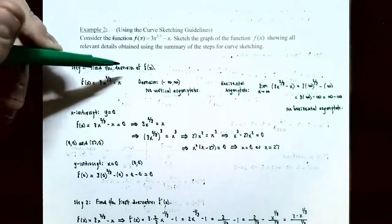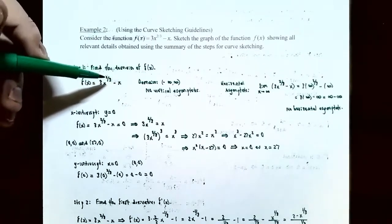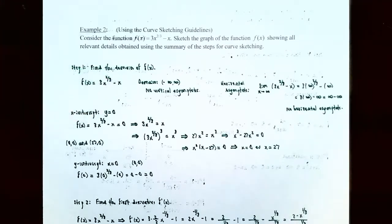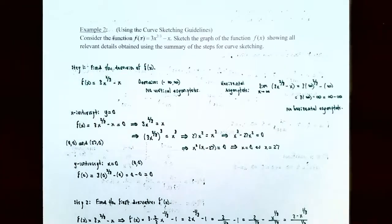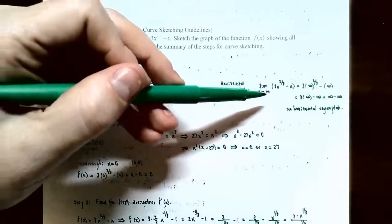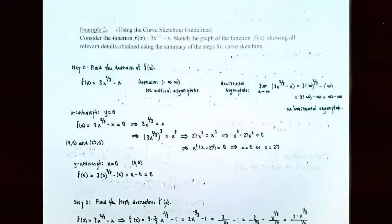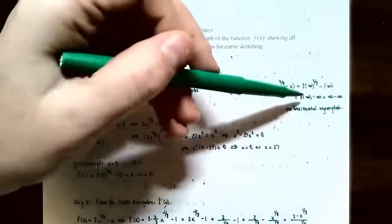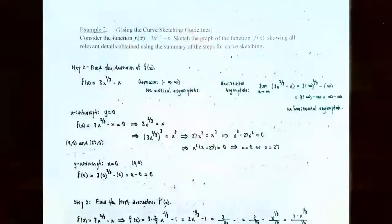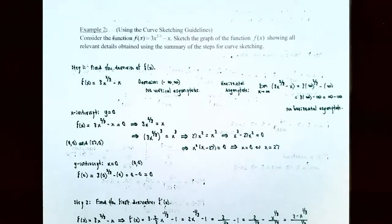Step one: find the domain. f(x) = 3x^(2/3) − x involves a cube root, since x^(2/3) = ∛(x²). You can take cube roots of any real number, so the domain is all real numbers. There are no vertical asymptotes. For horizontal asymptotes, the limit as x → ±∞ of (3x^(2/3) − x) gives ∞ − ∞, which is an indeterminate form — so there are no horizontal asymptotes.